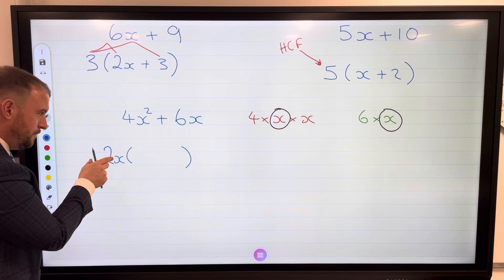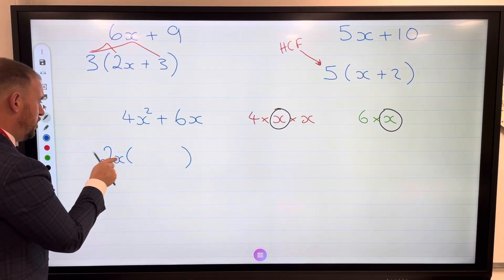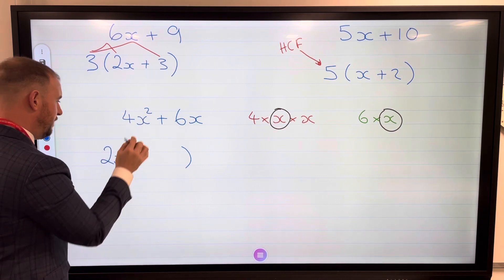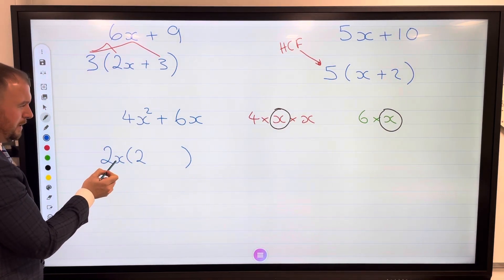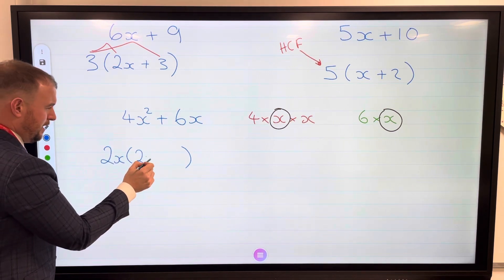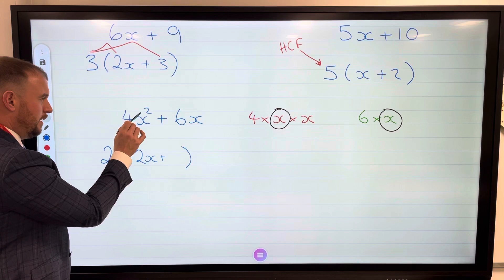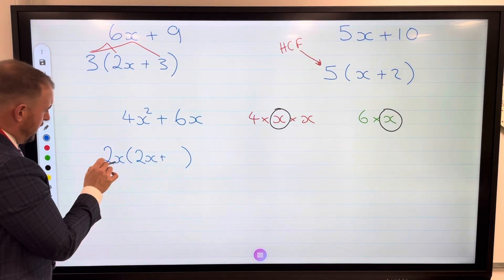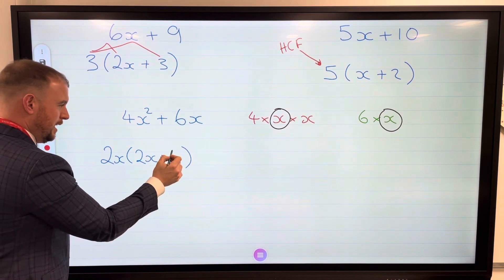Now I've got to fill in the middle of the bracket here. To get from 2x to 4x², I've got to multiply it by 2 first of all to get the 4. If I've got an x but I need an x², I must need to multiply it by another x. Remember, x times x is x². And then here, 2x multiplied by something equals 6x, that's got to be 3.